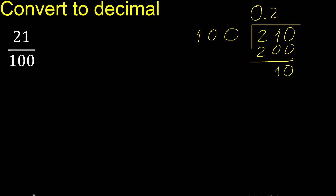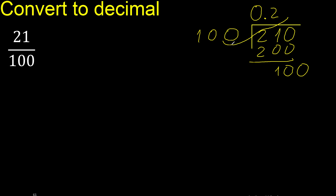There is no number that goes down, therefore always complete with 0. The point is here. 100 multiply by which number is nearest to 100 — multiply by 1 is 100. Subtract 0. Therefore finish.